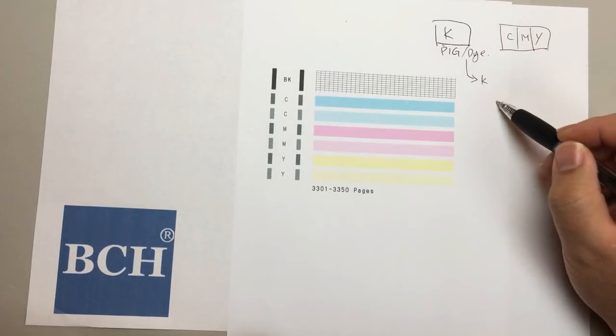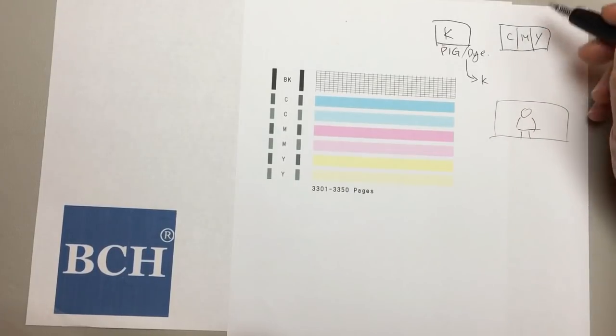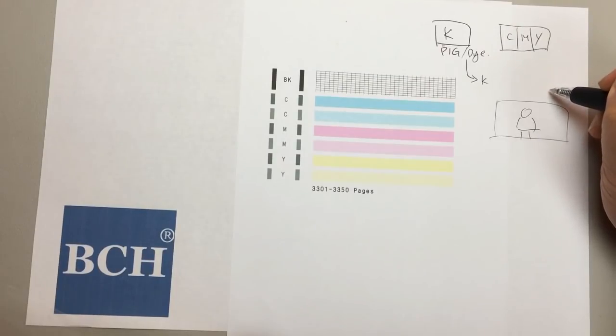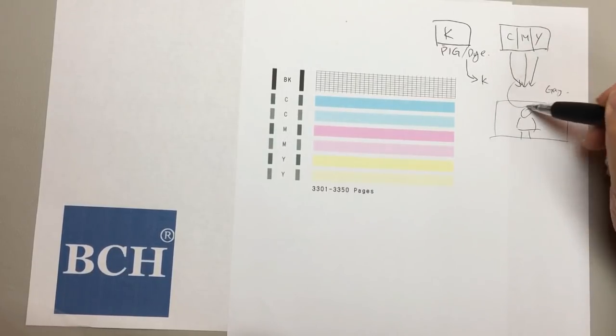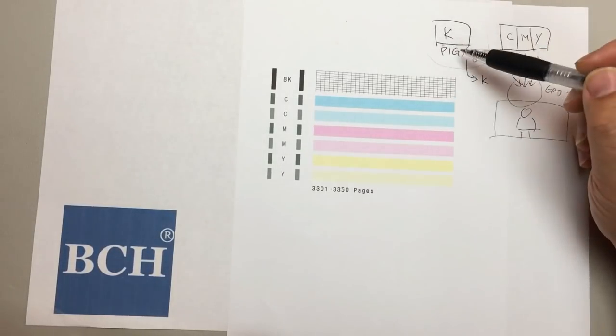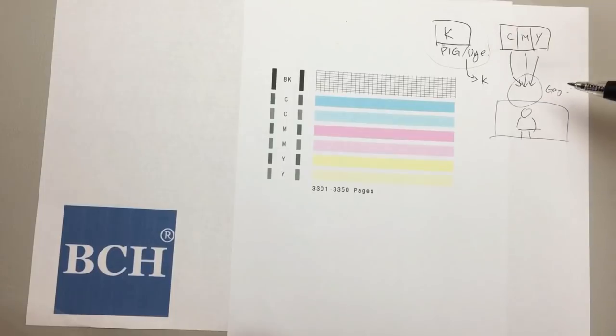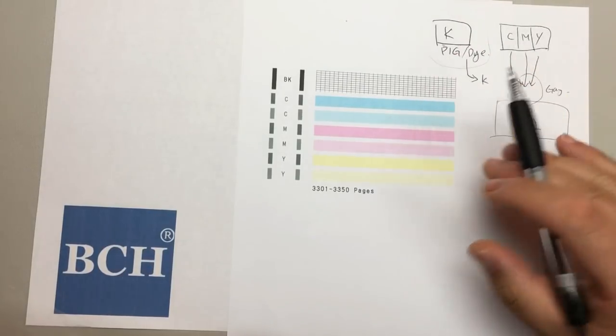However, if you print a photo, even if it's gray or some other colors, even if it's black, the printer combines those three colors. Pigment ink has been known that it's not really great at printing pictures. When you print pictures, the printer is trying to use those three colors to print a picture.